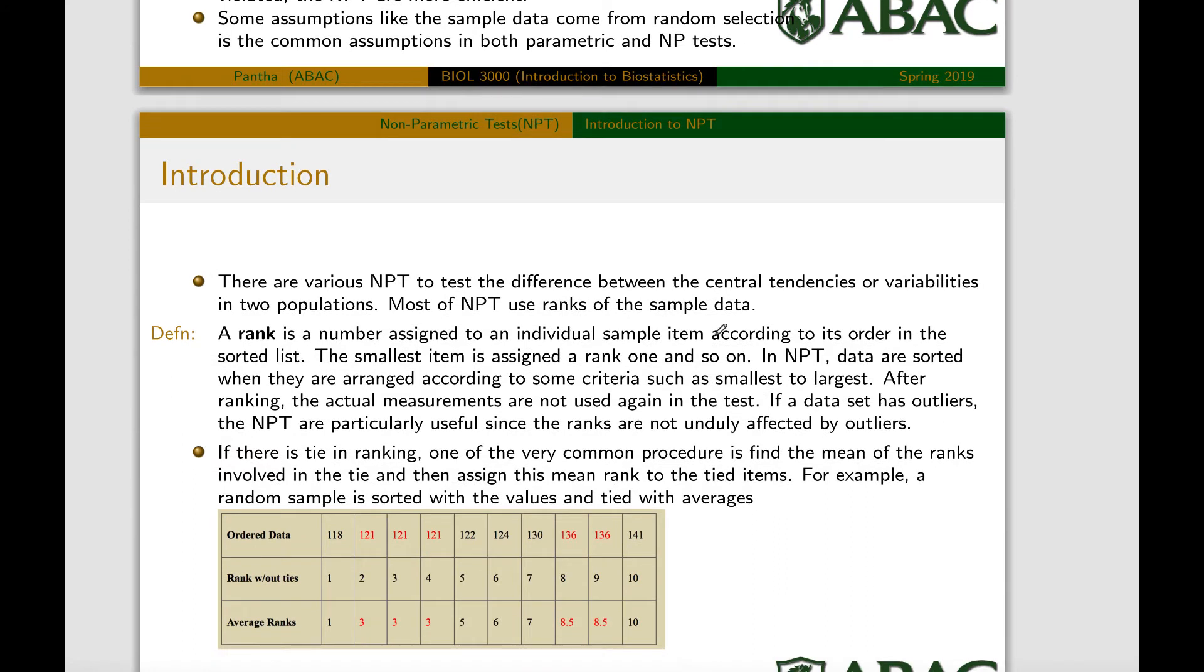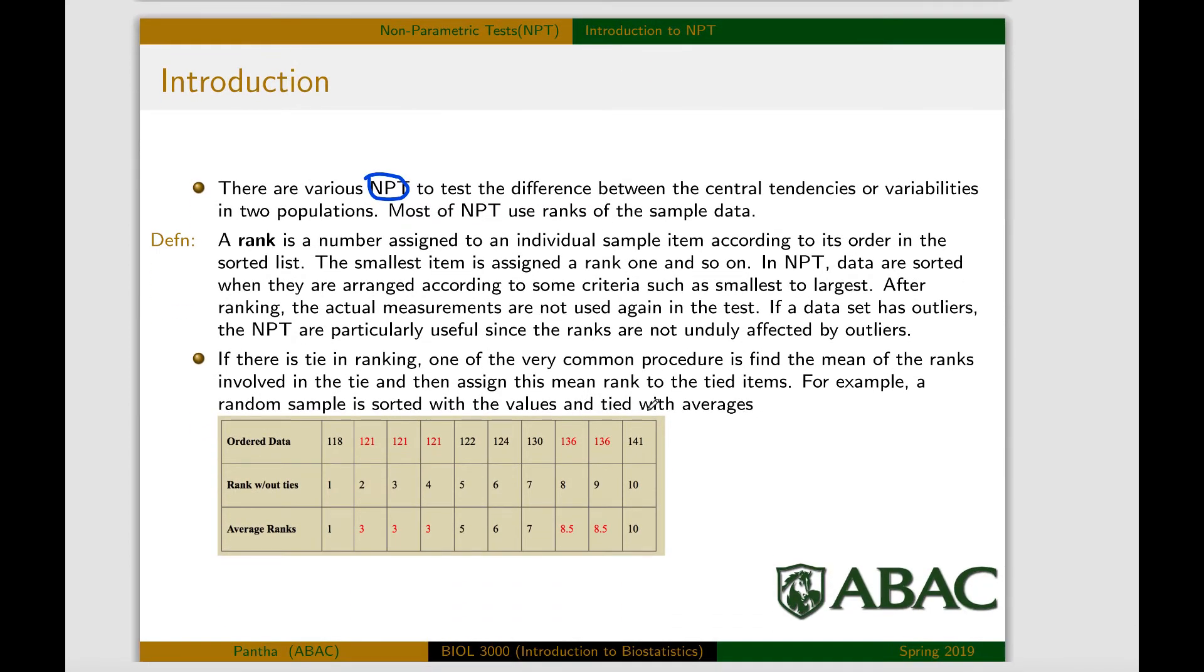Most of the non-parametric tests we call NPT. Most of the non-parametric tests use ranks of the data. The rank is basically how we find out the rank of the data: we write the data in increasing order. The smallest data is denoted by 1, second smallest data 2, and then 3, 4, 5 like that.